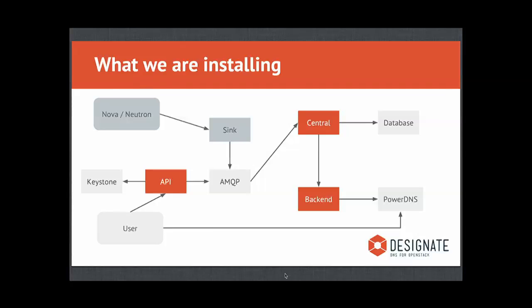A quick overview of where Designate fits within OpenStack. The orange boxes are the components we are going to be installing. Designate has the API, the front end, which talks over RabbitMQ to Central. Central is the repository for everything that comes in. It has a database that stores everything — that is pluggable, with SQLAlchemy in front of it, so you can plug anything in there. Right now it is MySQL. Then the information flows on to the backend, which is where real DNS happens when you resolve against names.